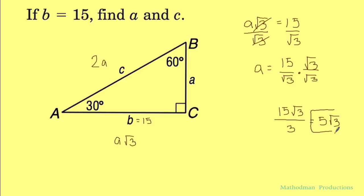And you got your answer for a. So now I know that that's 5 square root of 3. And to find the hypotenuse, it's whatever a is times 2, which is 2 times 5 square root of 3, which gives that to us as 10 square root of 3.